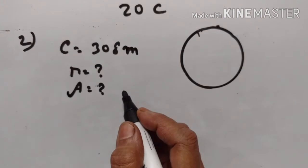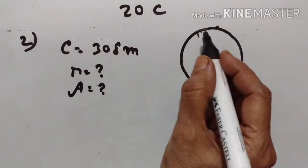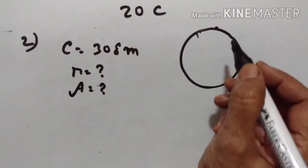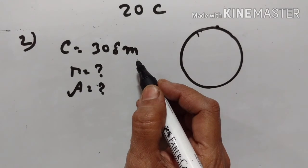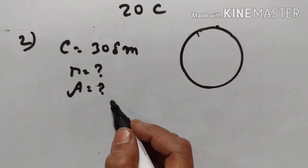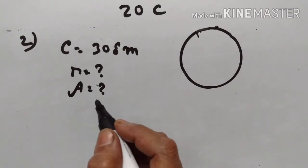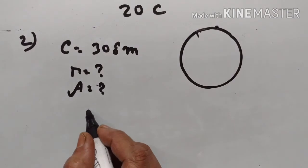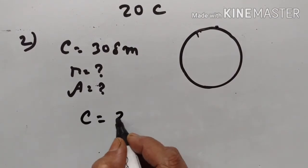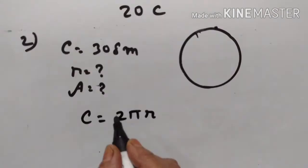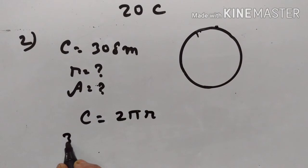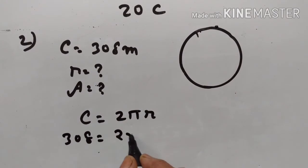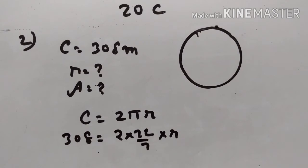Second problem. The circumference of a circular field is equal to 308 meters. You have to find the radius and area. Circumference is equal to 2πr, and circumference is equal to 308 meters, so 2 × (22/7) × radius.